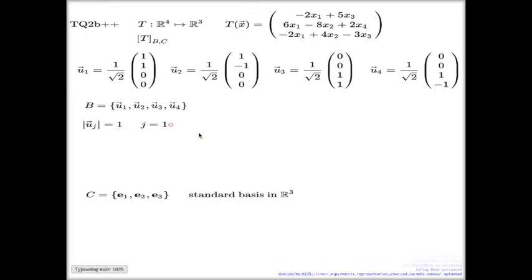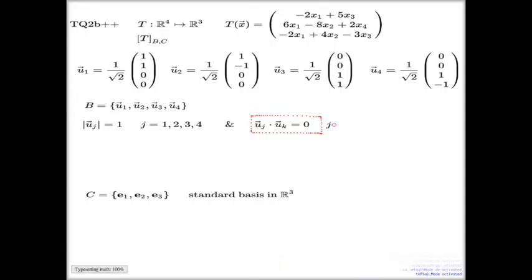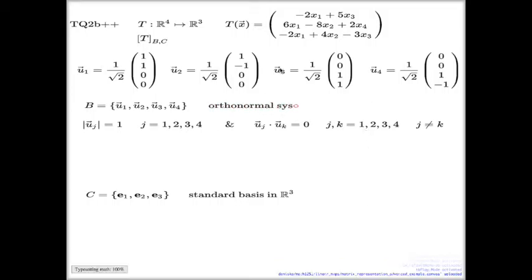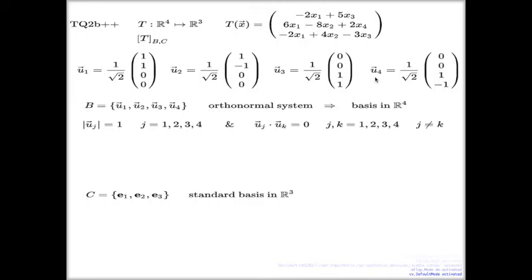If you spot something like this — an orthonormal system — it's a big time saver in many regards. For instance, if somebody asks you to check that this is a basis, all you need to say is: every orthonormal system is a basis, therefore it is a basis in R^4. That's why I encourage you to train your eye to spot these things. Computing T of each U_j: I apply the formula for T to U1, U2, U3, U4, plugging in their components and collecting the results.